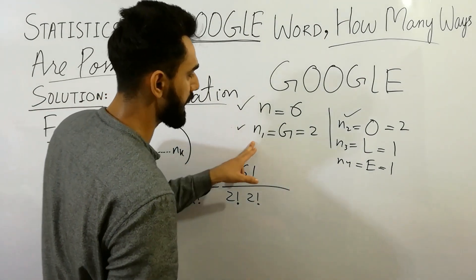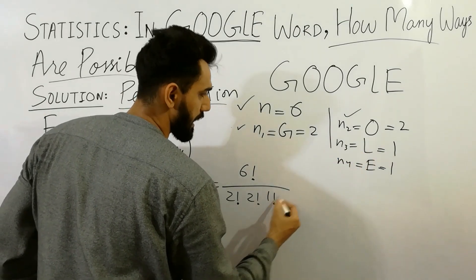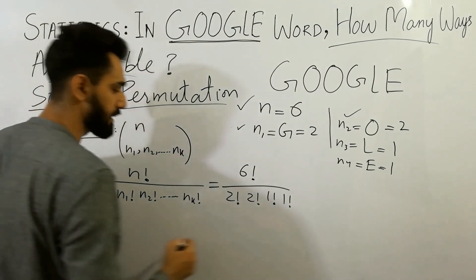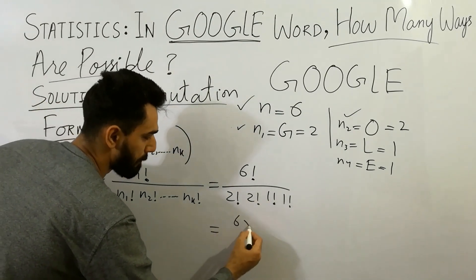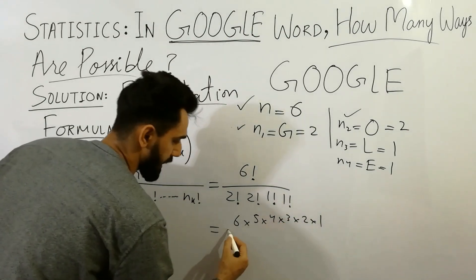Next part is here: N3 is 1, 1 factorial. N4 is 1, 1 factorial. That's it. Next step is here. Now, 6 multiplied by 5, multiplied by 4, 3, 2, 1, and next.